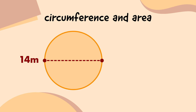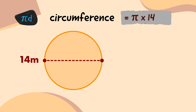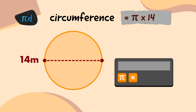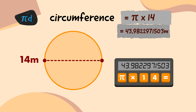I know exactly how to do this now. The circumference is equal to pi d, so on my calculator, I'll press the pi button, press the multiply button, type 14, and press the equals button, which gives me 43.9822971503.